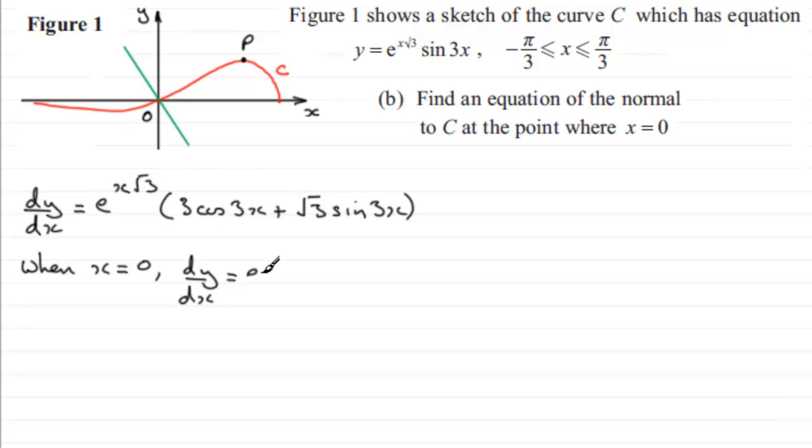0 times √3 is 0, then we're going to have 3cos(3×0), so 3 times the cosine of 0, and then we've got plus √3 times sine of 3 times 0, so plus √3 times the sine of 0. We're working in radians remember here.